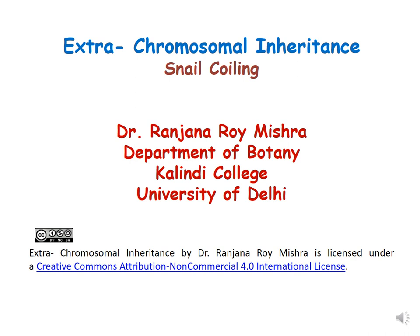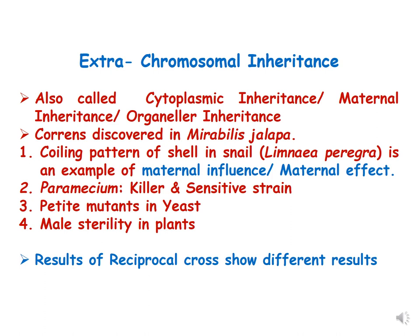Hello dear students. This is the second lecture of extrachromosomal inheritance and in this lecture we will be discussing the example of snail coiling. In the first lecture we understood what extrachromosomal inheritance is. To summarize: extrachromosomal inheritance is also called cytoplasmic inheritance, maternal inheritance, or organellar inheritance. Correns discovered the first example in Mirabilis jalapa.